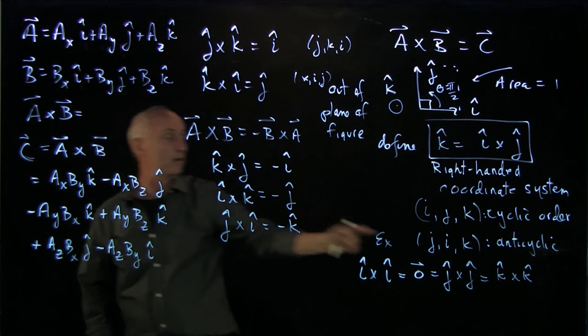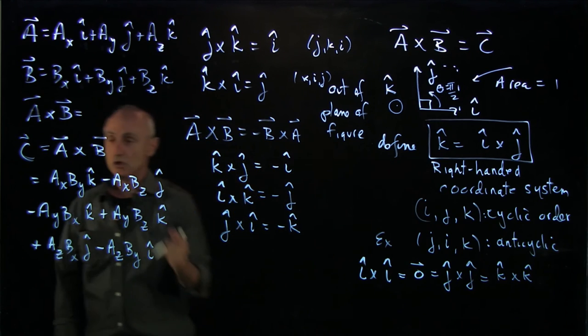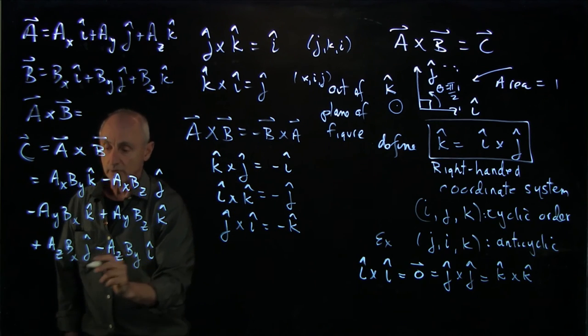And finally, k hat cross k hat. Well, that's also 0. So we have six terms. And we can collect them.